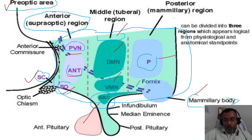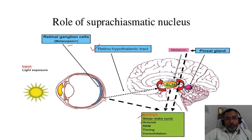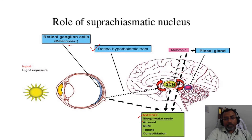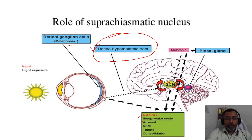Now we need to study the role of the suprachiasmatic nucleus, because this question is related to the circadian rhythm. This diagram shows how the suprachiasmatic nucleus is important for maintaining our circadian rhythm. The suprachiasmatic nucleus receives impulses through the retinohypothalamic tract.